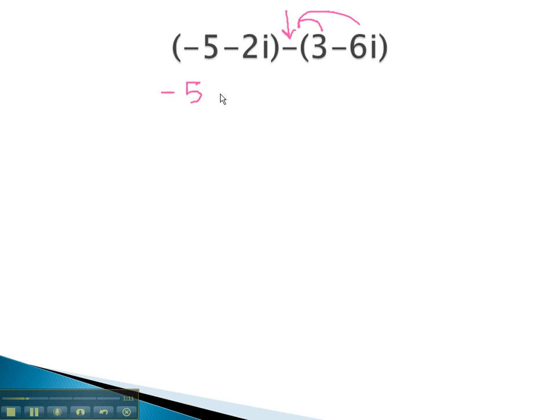When we do that, we now have negative 5 minus 2i, then minus 3, plus negative times a negative, 6i.